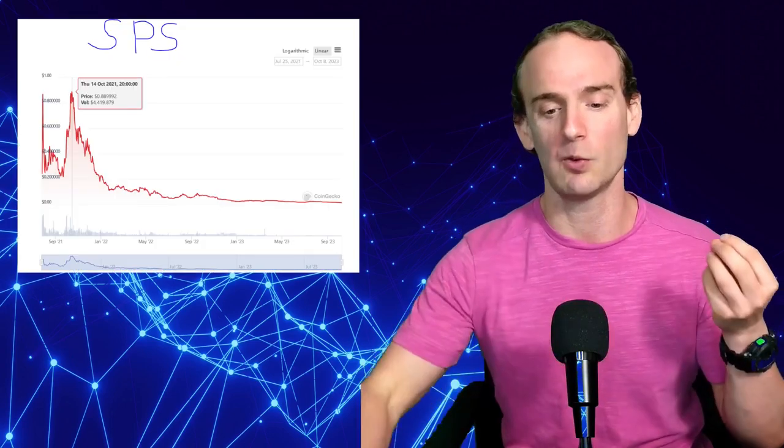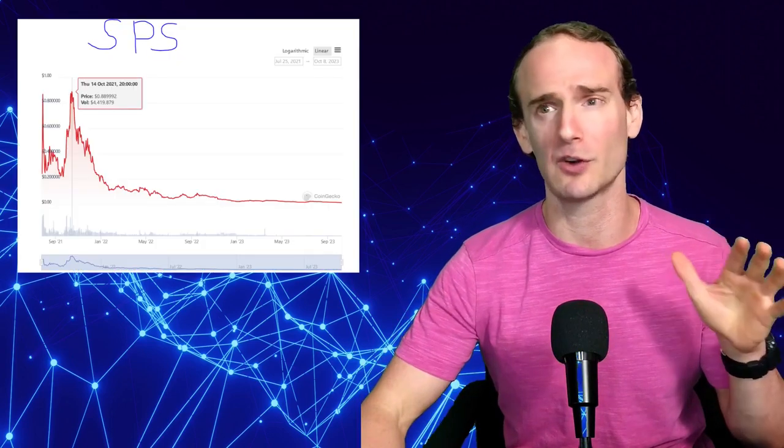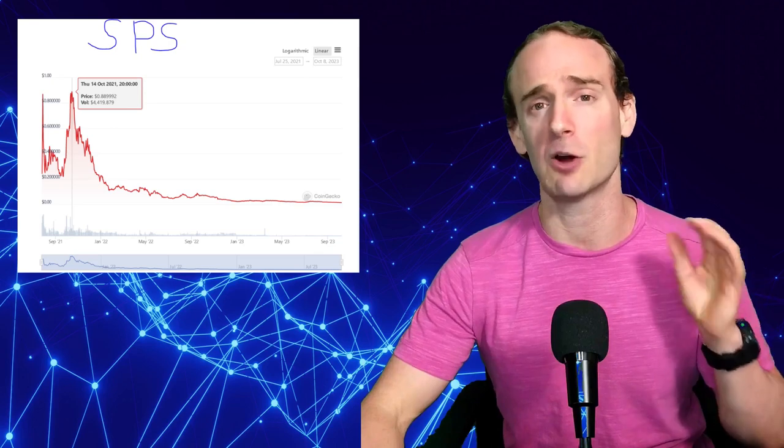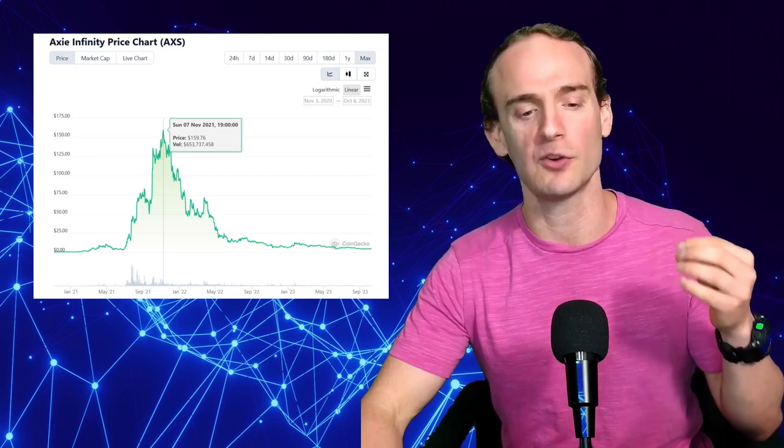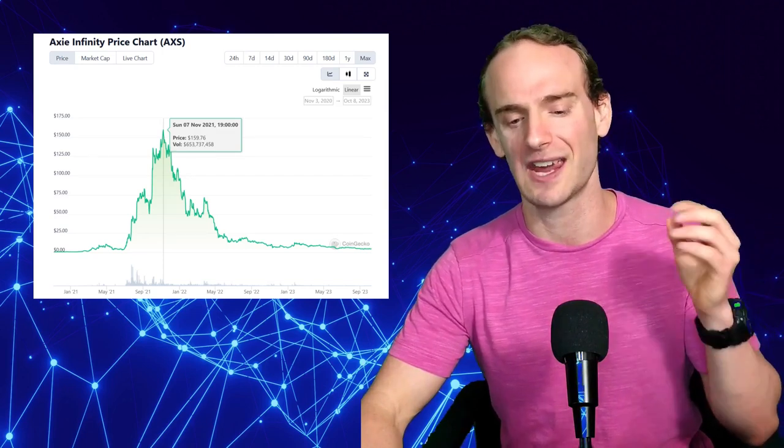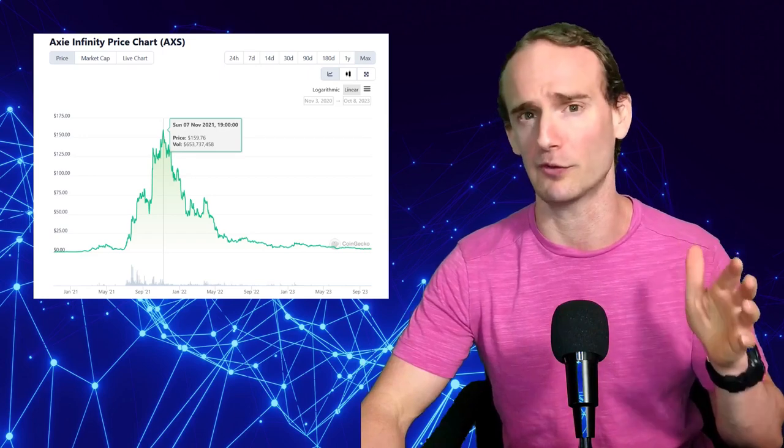If we look at blockchain gaming, such as Splinterlands, they had their cryptocurrency, the SPS governance token, that at one point I think was selling for somewhere around $0.88. It's now less than $0.02. If we look at AXS, Axie Infinity, at one point was selling for almost $160. And I think now it's around $4 or $5.